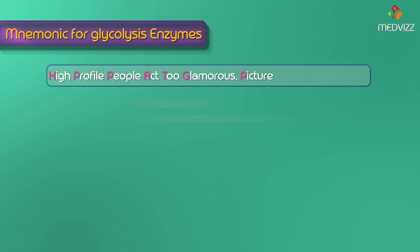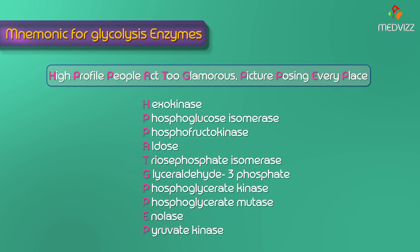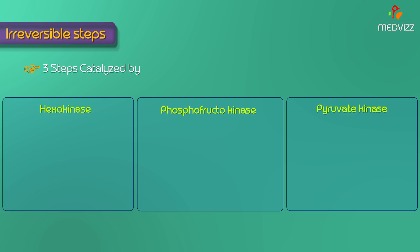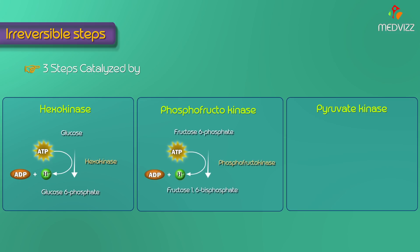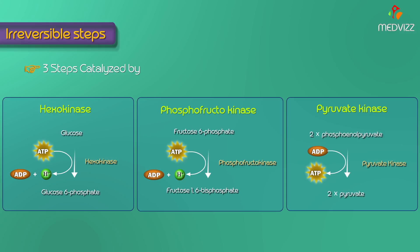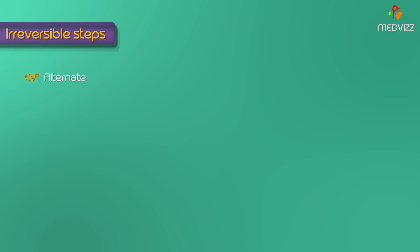To remember the enzymes of glycolysis, there is a useful mnemonic: 'High profile people, attitude glamorous, picture posing every place.' Regarding irreversible steps: most reactions of glycolysis are reversible except 3 steps catalyzed by the kinase enzymes — hexokinase, phosphofructokinase, and pyruvate kinase. All three kinase enzymes are irreversible in nature. These three steps mainly regulate glycolysis, and alternate arrangements at these steps lead to the synthesis of glucose from pyruvate in gluconeogenesis.